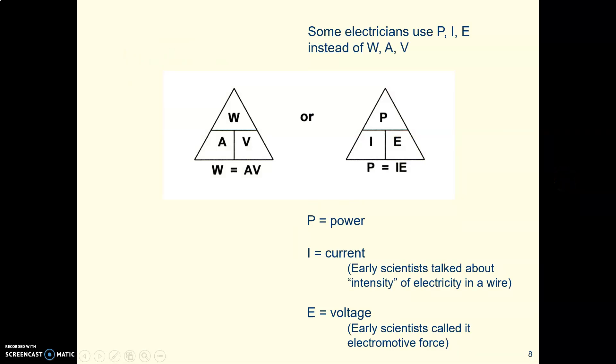You often see these called not watts, amps, volts, but a lot of electricians will use these symbols. So instead of W for watts, they'll use P for power. Instead of A for amps, they'll use I for intensity of current. And instead of V for volts, they'll use E for EMF. I'm going to use watts, amps, volts, but just be familiar with this PIE thing.